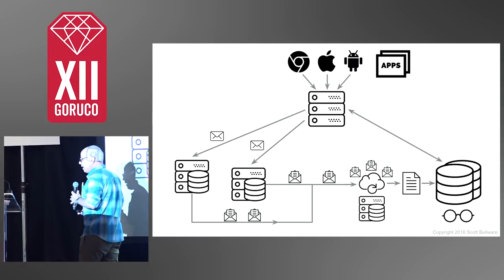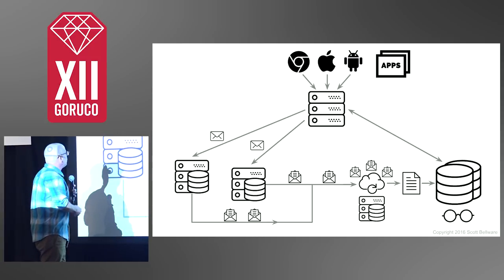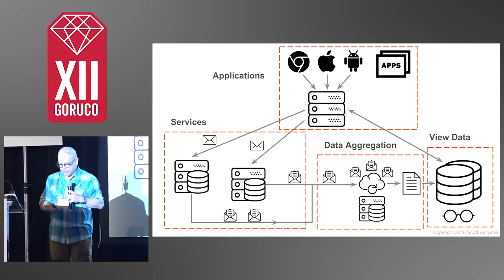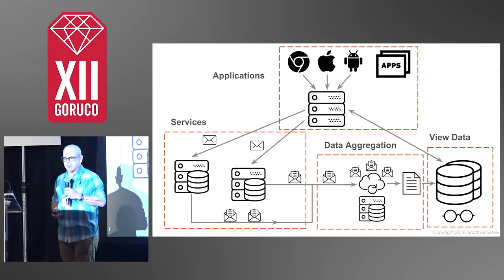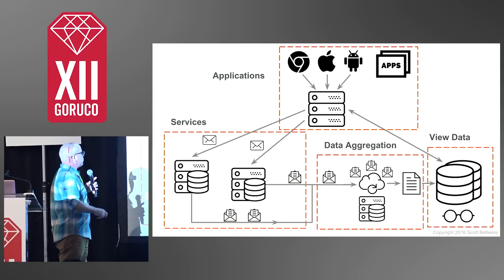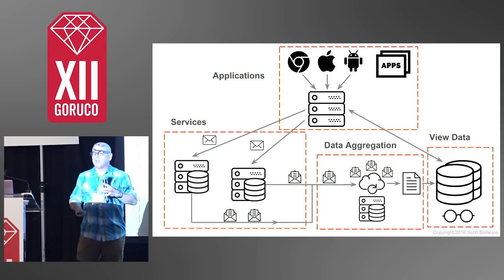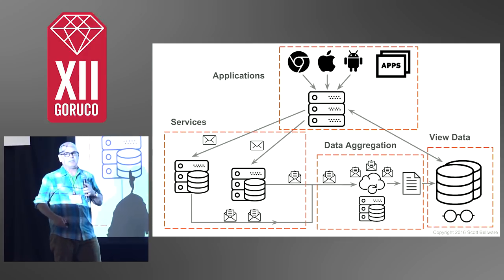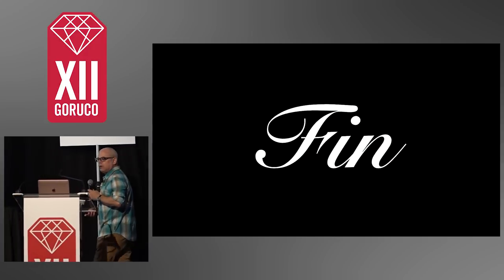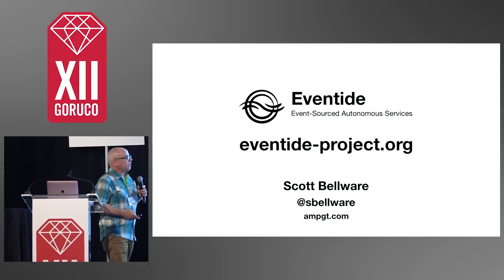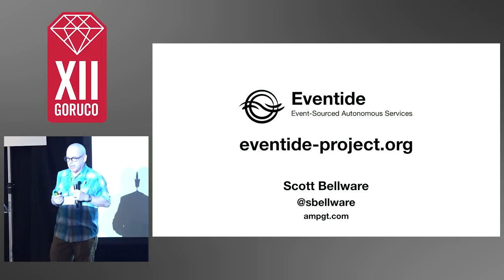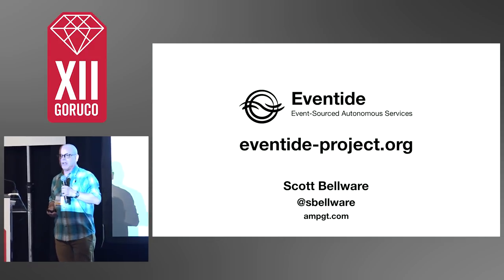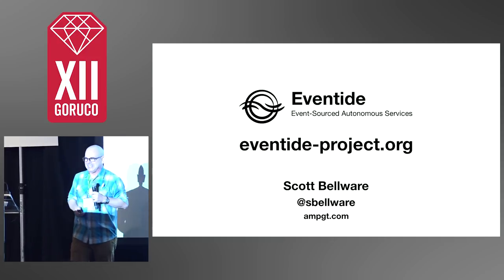This is what the full architecture ends up looking like. I've only talked about the services part. The rest of it is applications, data aggregation, and view data. This is an architecture commonly called CQRS — where on the left you have services receiving commands and emitting events, and those events are read and turned into database tables or views, and that data is what gets painted onto the UIs. If you want more information about the Eventide project, which is entirely written in Ruby, take a look at the links. And that's all I have. Thank you.